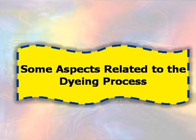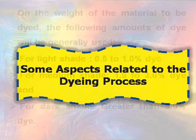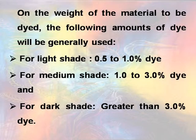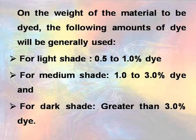Some aspects related to the dyeing processes are based on the weight of the material to be dyed. The following amounts of dye will generally be used: for light shades, 0.5 to 1 percent dye; for medium shades, 1 to 3 percent dye; and for dark shades, greater than 3 percent dye.